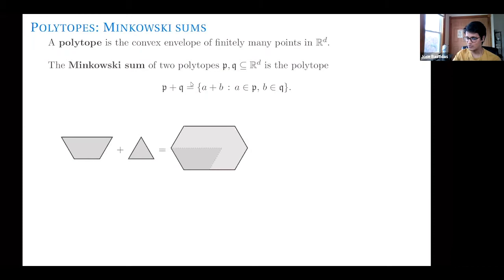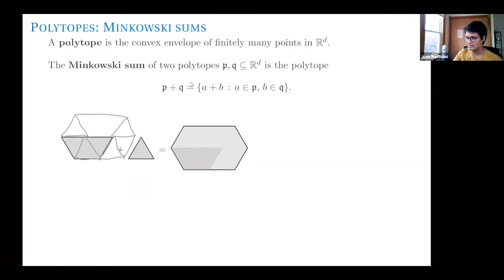Geometrically, here we're going to take the Minkowski sum of this trapezoid and this triangle. I take the triangle and fix one of its points, and try to put this point in every vertex of the other polytope. So I put the triangle over here, and then over here, over here, and here — in the four vertices in this case — and take the convex envelope of what I get. When I take the convex hull of this, I obtain something like this hexagon on the right.